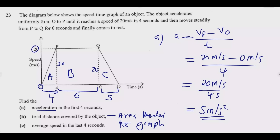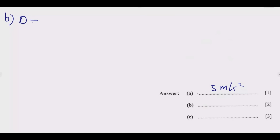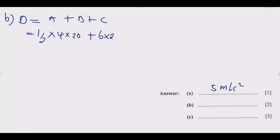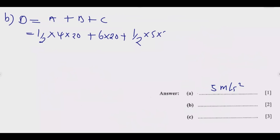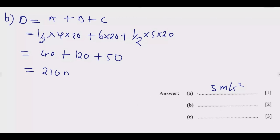The total distance equals area A plus area B plus area C. That is: half times 4 times 20, plus 6 times 20, plus half times 5 times 20. Calculating: half times 4 is 2, times 20 gives 40; 6 times 20 is 120; half times 5 is 2.5, times 20 is 50. So we end up with 40 plus 120 plus 50 equals 210 meters — the total distance covered by the object.